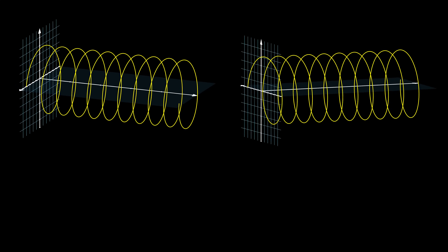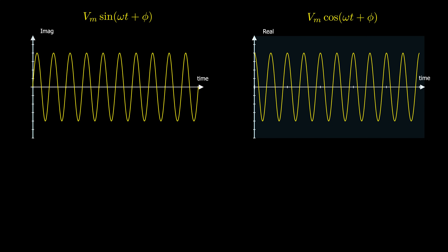A sinusoid can be expressed in either sine or cosine form. We can visualize sine and cosine as a set of axes, where the horizontal axis represents the magnitude of cosine, while the negative vertical axis represents the magnitude of sine. Positive angles are measured counterclockwise from the horizontal axis. Negative 90 degrees of phase in the cosine gives the sine, while positive or negative 180 degrees gives the minus cosine, and negative 90 degrees from the minus sine gives cosine. So we can represent the sinusoid in cosine form by adding the right amount of phase.